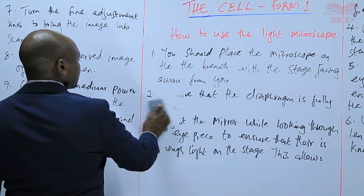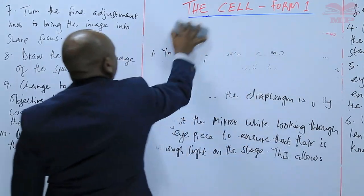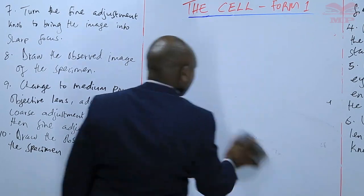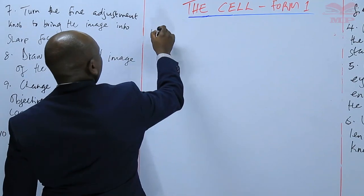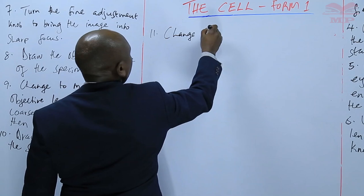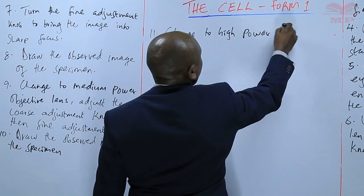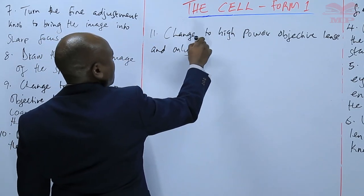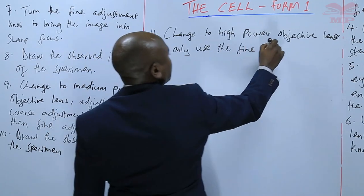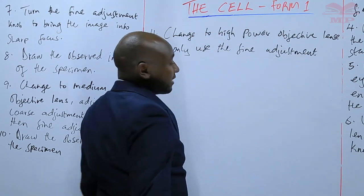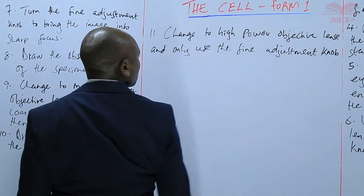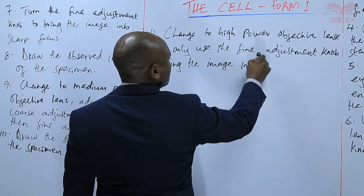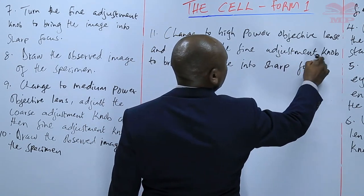The last step is to use the high power objective lens. Change to the high power objective lens, and only use the fine adjustment knob — do not use the coarse adjustment knob. Only use the fine adjustment knob to bring the image into sharp focus, and then draw the observed image.